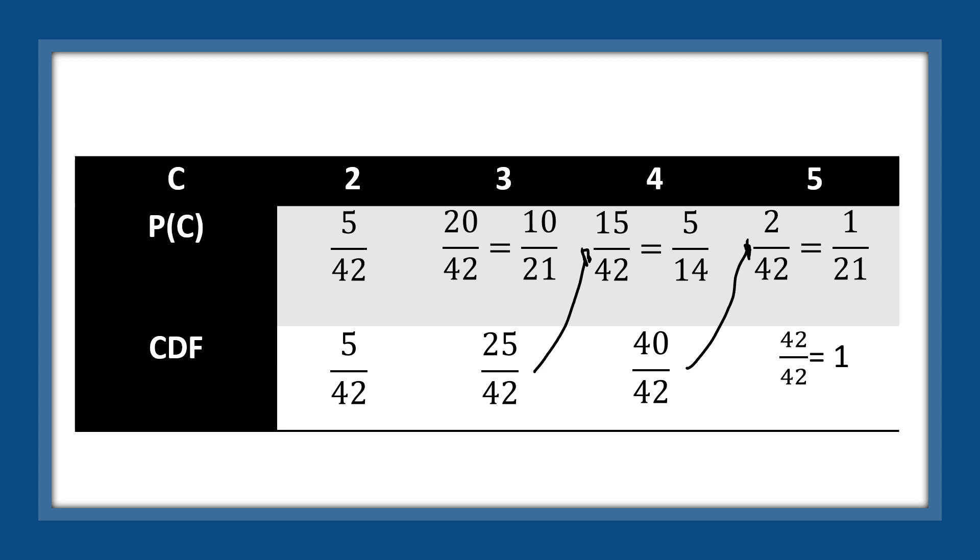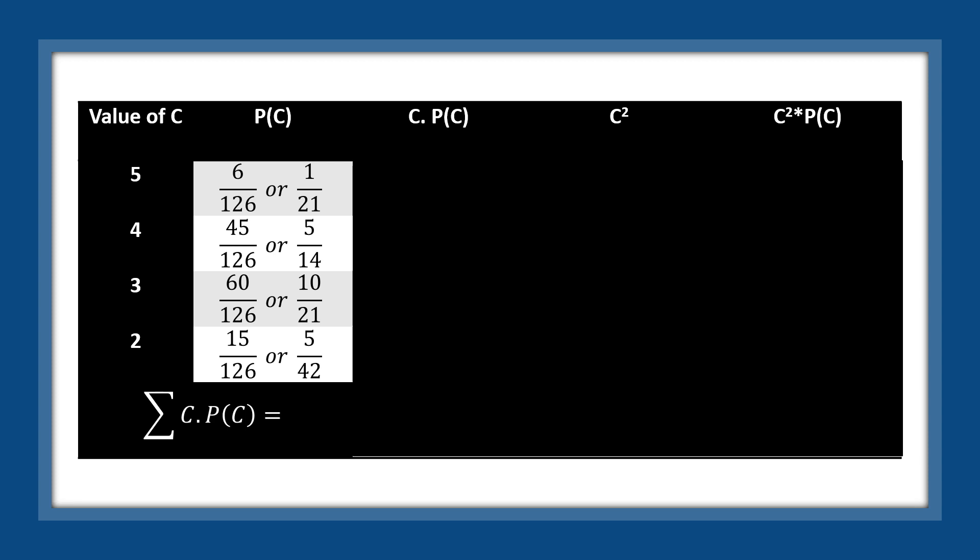Now we move to the main topic: mean, variance, and standard deviation of a discrete random variable. The first thing you're going to do is construct a 5-column table with: value of C, P(C), C times P(C), C squared, and C squared times P(C). After this, rewrite the value of C and P(C) from your probability mass function or discrete probability distribution, then proceed to multiply C by P(C).